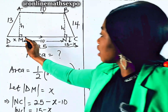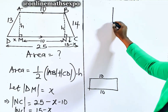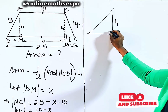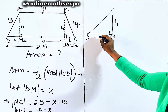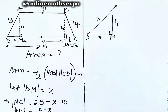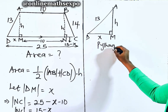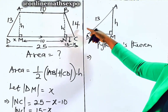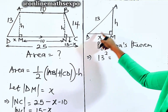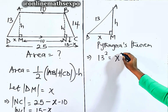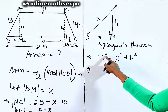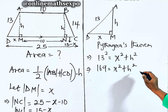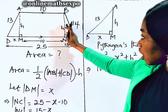Now this left shape has formed a right triangle with height h, base DM equal to x, and hypotenuse AD equal to 13. Using the Pythagorean theorem: 13 squared equals x squared plus h squared, so 169 equals x squared plus h squared. Let's call this equation 1.